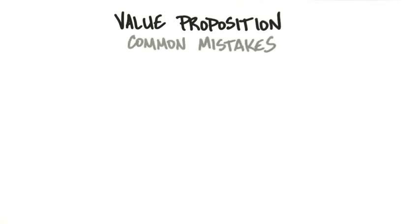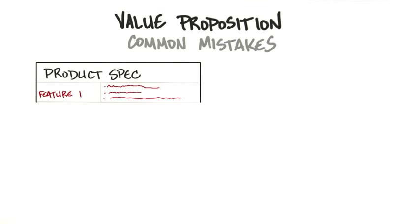There's a couple of mistakes when you're thinking about value proposition. One is that what you're building might just be a feature of someone else's product.